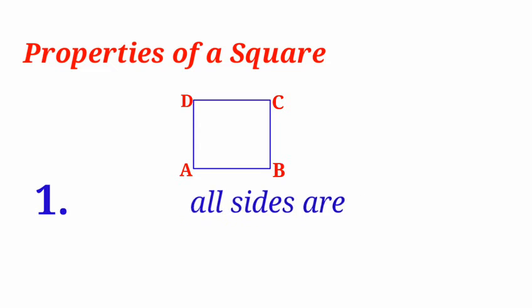Next, come to the properties of a square. First property: all sides are equal in a square.